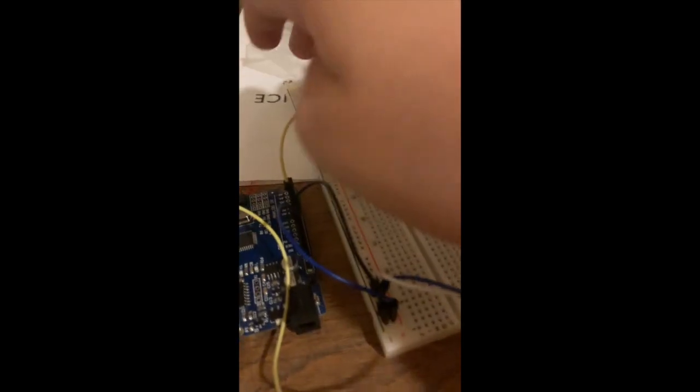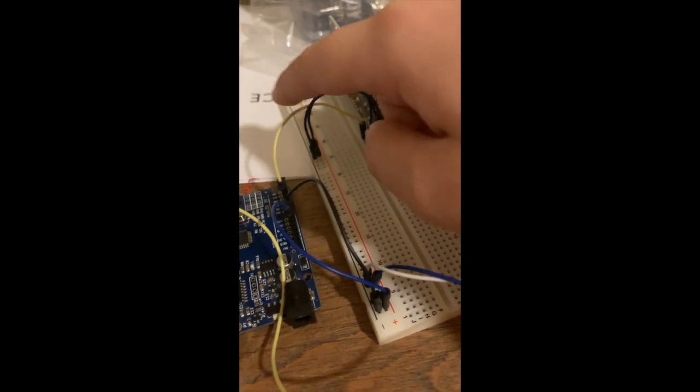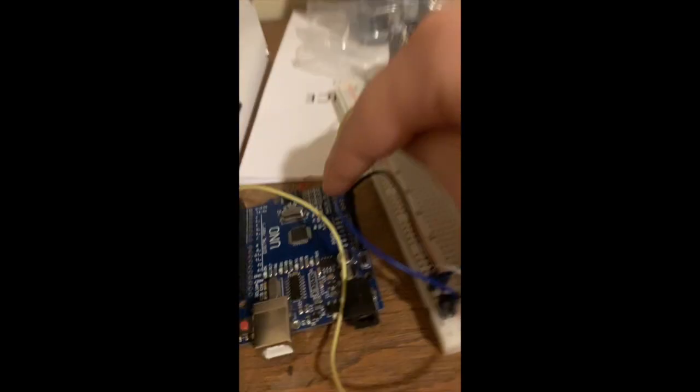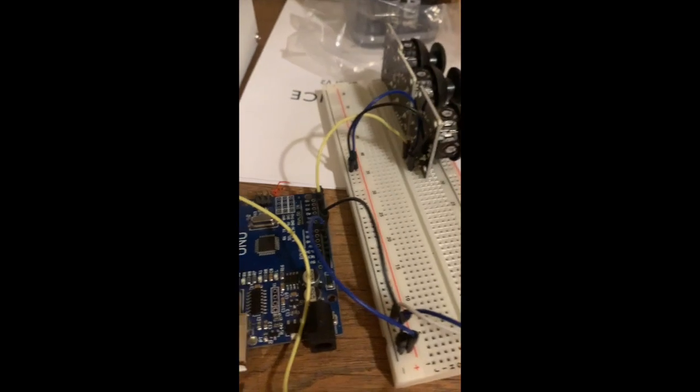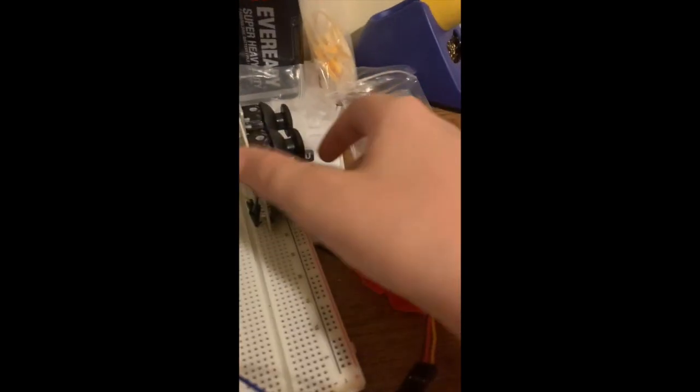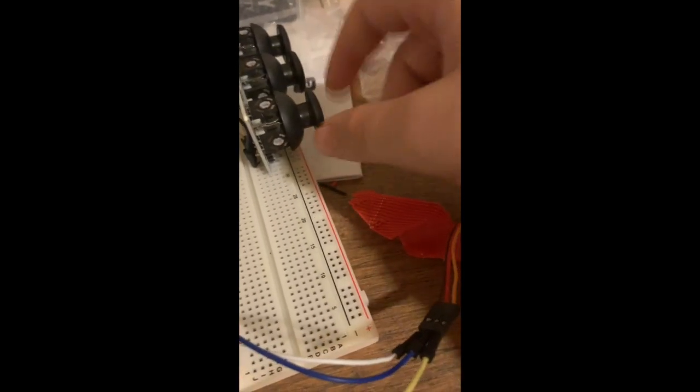And then I have the yellow wire going to A0. So we have an analog input on pin 0 for the x-axis for this joystick.